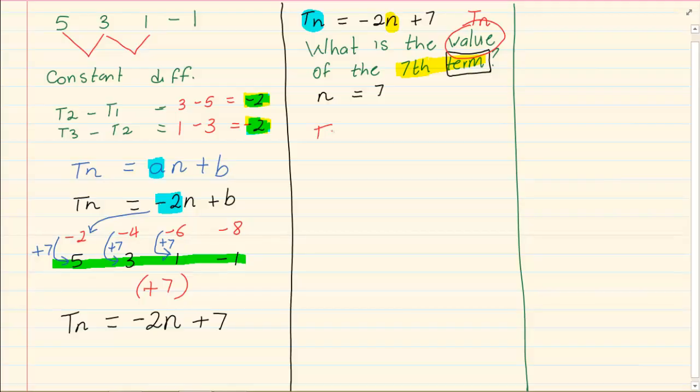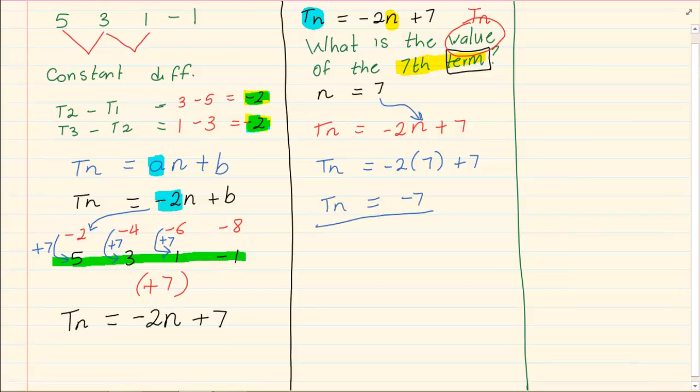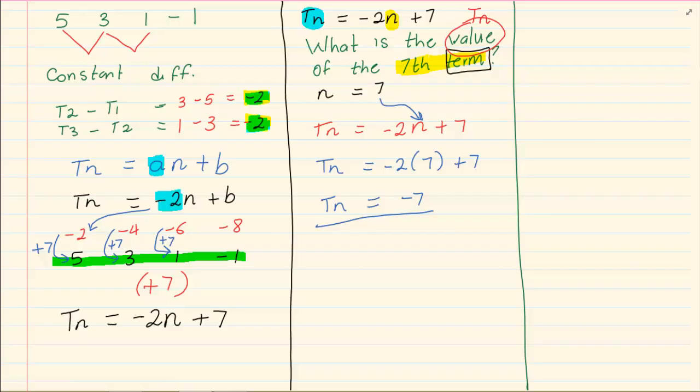We are simply going to take the 7 and we are going to substitute it into N because that is what was given. So we got Tn is equal to minus 2 into 7 plus 7 which is equal to minus 7. So what is the value of the 7th term? The value of the 7th term is minus 7. Now let's do another example.